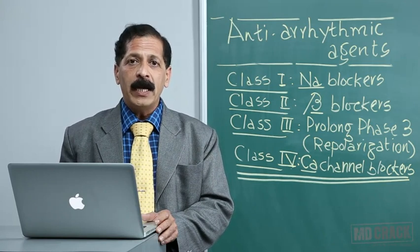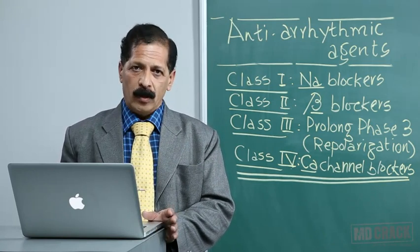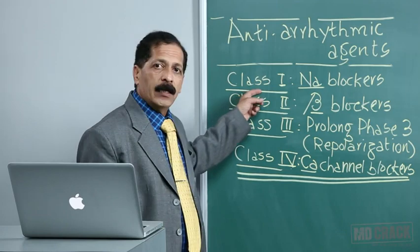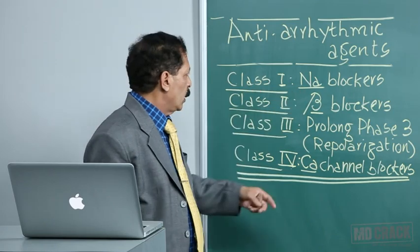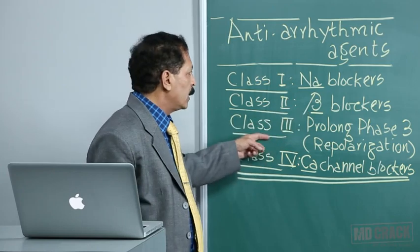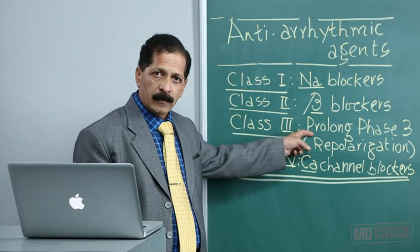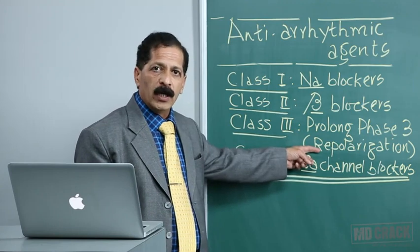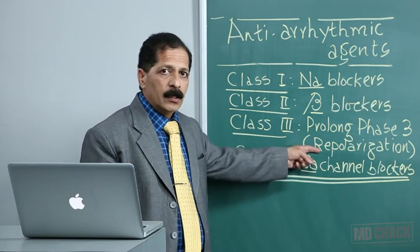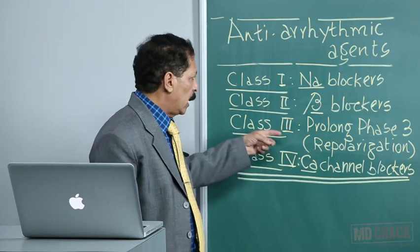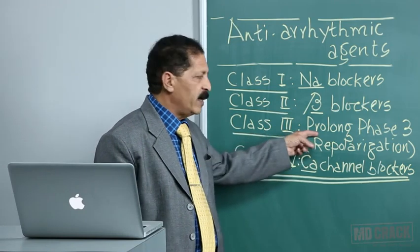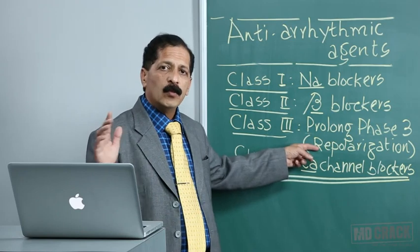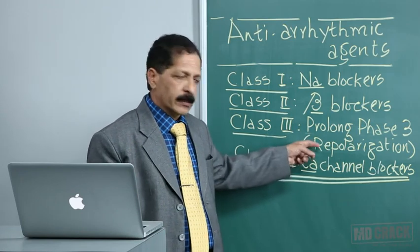At the beginning I'll tell you the classes of drugs so you have a brief idea before the actual discussion. Class 1 antiarrhythmic agents are sodium channel blockers. Class 2 are beta blockers. Class 3 are drugs which prolong phase 3 — that's repolarization, related to the outward potassium current. Class 4 are calcium channel blockers.